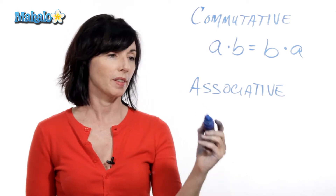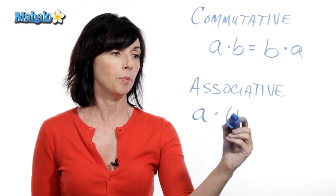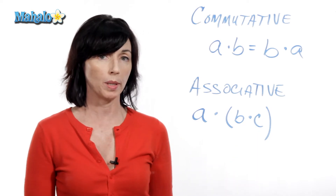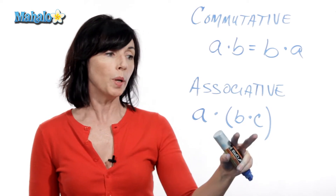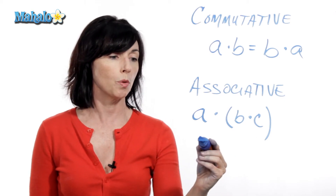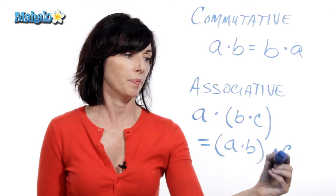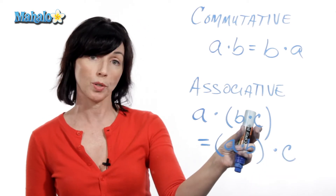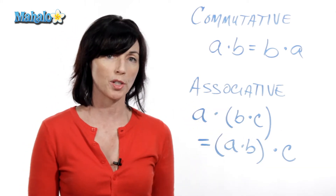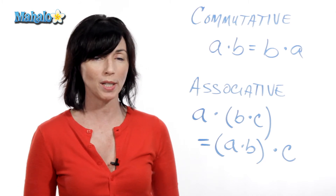Now let's look at the associative property. Let's say I have A times the quantity B times C. What the associative property says is it doesn't matter which two I multiply together first — I'll still get the same answer. So this will be equal to the quantity A times B times C. It doesn't matter if I associate these two or I associate these two, I will still get the same answer when I do the multiplication. That's the commutative and associative properties for multiplication.